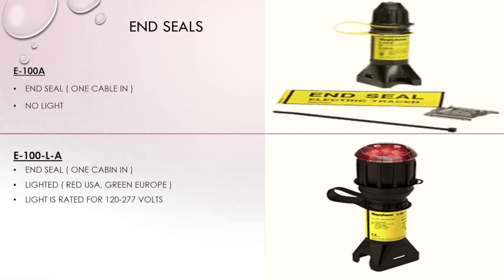At the end of every heat trace cable run you need an end seal. We have two types: the E100A, which is one cable in with no light, and the E100LA, which is a lighted end seal — also one cable in. In the US the light is red; in European locations it's green. The US lighted version operates from 120 volts up to 277 volts, covering 120V, 208V, 240V, and 277V. Those are our Class 1 Div 2 industrial components.